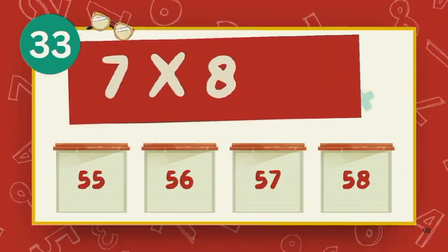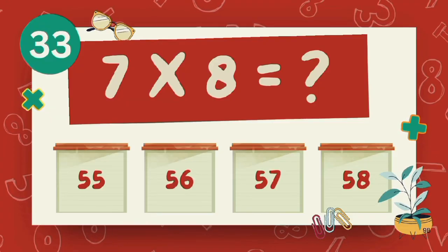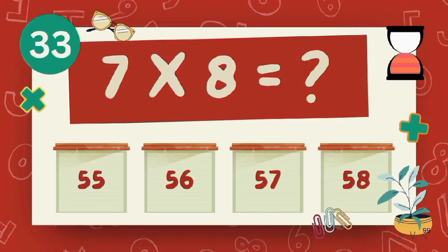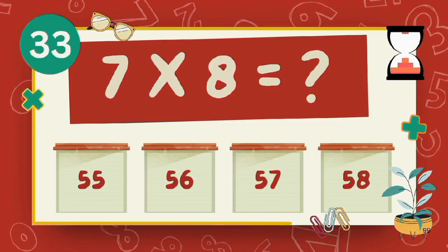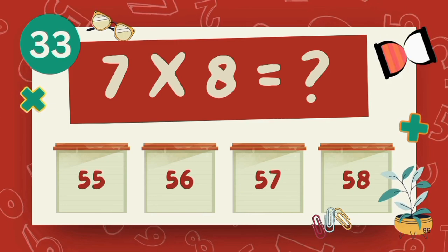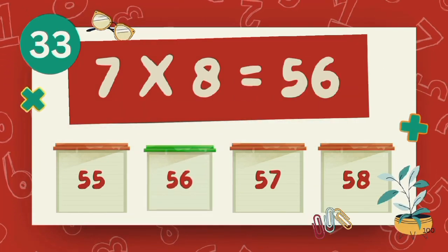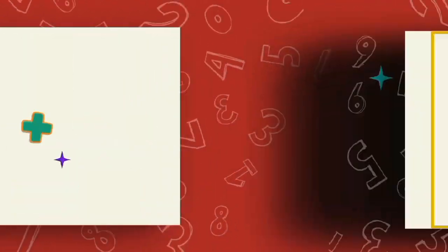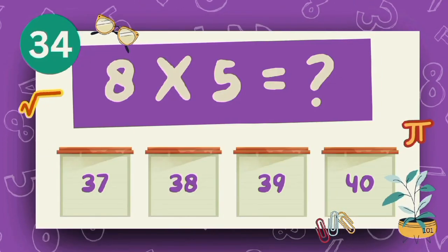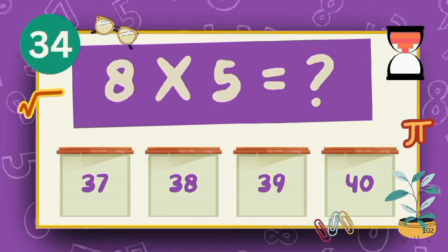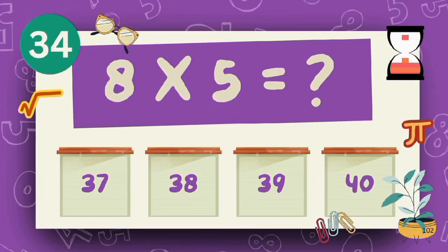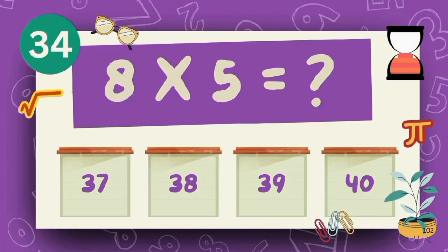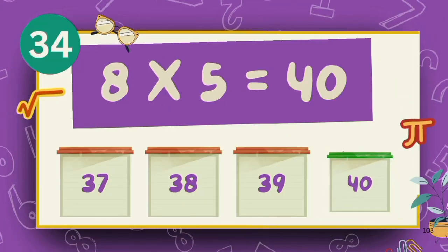What does 7 multiply 8? What does 8 multiply 5? The answer is 40.